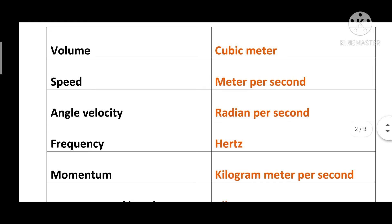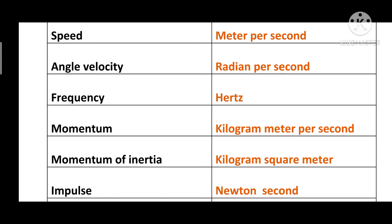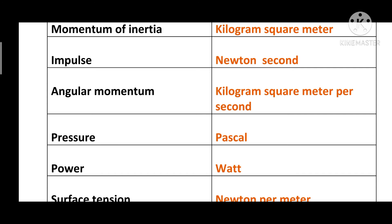Volume: cubic meter. Speed: meter per second. Angular Velocity: radian per second. Frequency: hertz. Momentum: kilogram meter per second. Moment of Inertia: kilogram square meter. Impulse: newton second. Angular Momentum: kilogram square meter per second. Pressure: pascal. Power: watt.